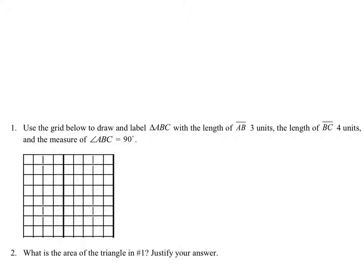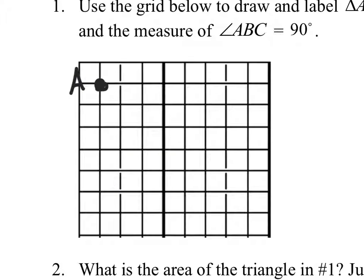Use the grid below to draw and label triangle ABC with length of AB being 3 units. Let us do that now. And B is 3 units away. And that gives me this line right here.